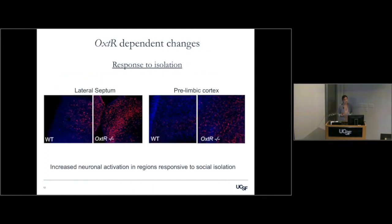When we go back to our isolation condition, the loss of this receptor dramatically alters activity in the lateral septum and prelimbic cortex. We see in the wild-type condition the activity we observed before, but then we also see a dramatic increase in activity in the oxytocin receptor mutants. This may indicate that the oxytocin receptor is normally acting in wild types to modulate which neurons are active and how active they are in this isolation context.